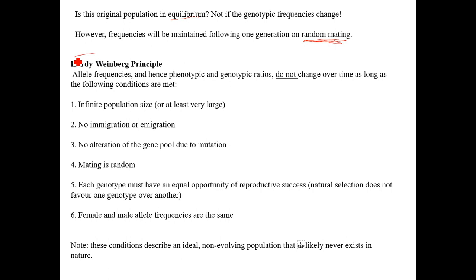This is the Hardy-Weinberg principle, or Hardy-Weinberg equilibrium — a model used in science to explain things and make predictions, just like Punnett squares do for genetic crosses. Whenever we use a model to make a prediction we make assumptions, and we do our best to get the most accurate prediction possible, acknowledging it may not be perfect. That's what we'll find with the Hardy-Weinberg principle as well.